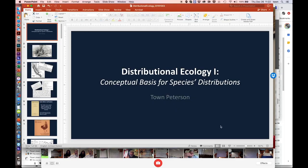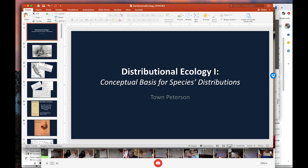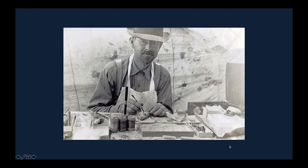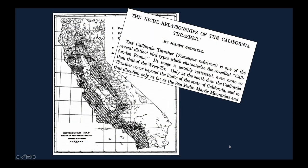I want to talk about this question of why is a species where it is and why is a species not where it's not. We can go back about a century to Joseph Grinnell, shown in this picture. I think it's a fair assertion that he started this science of distributional ecology. Of course it's had a renaissance in the last couple of decades, but let's give Grinnell a lot of credit.